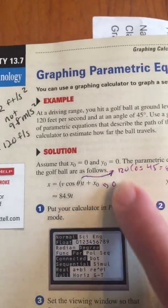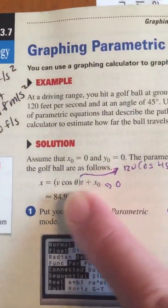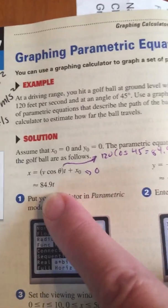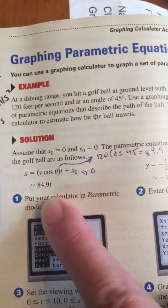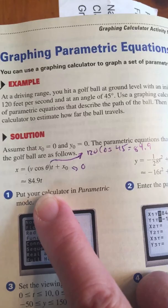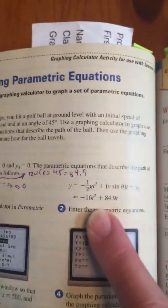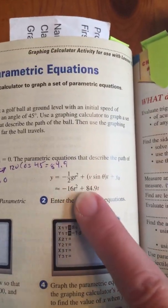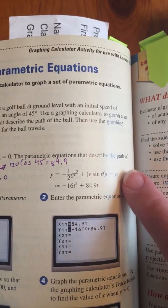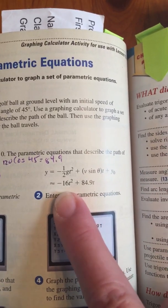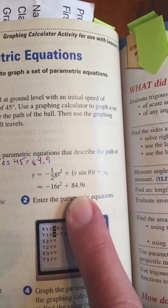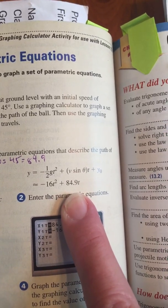I went ahead and solved that equation and figured it out. The approximate answer is 84.9T. And then the Y component is one half gravity, the equation. They filled it all out and they got negative 16T squared plus 84.9T.